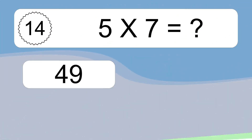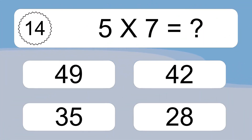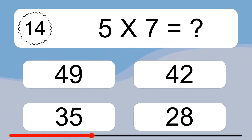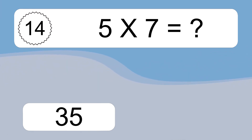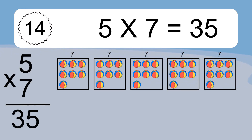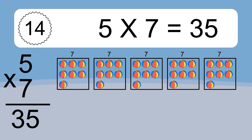Five times seven equals what? Five times seven equals thirty-five. We have five boxes, and each box has seven colorful balls inside. If you count all the balls in all the boxes together, you will have five times seven balls.